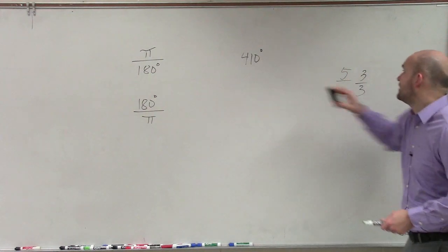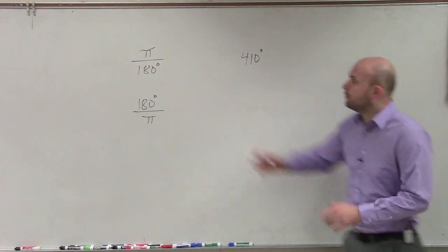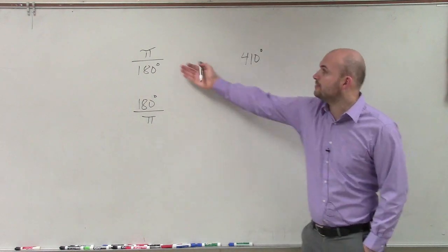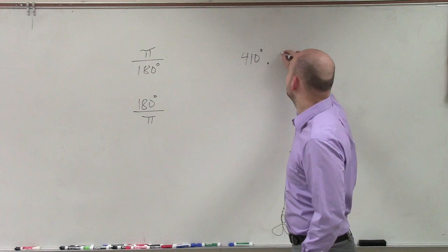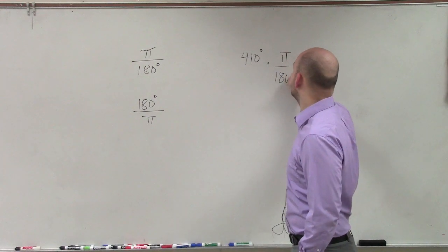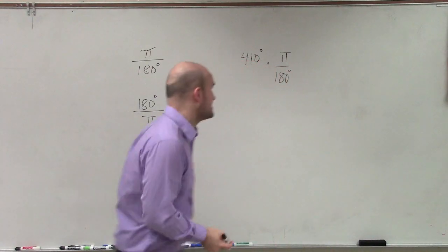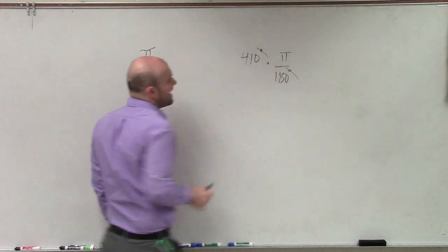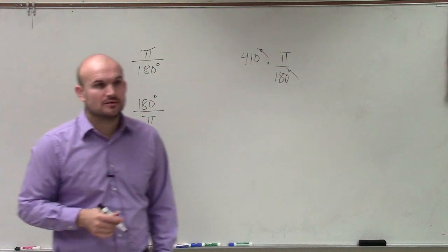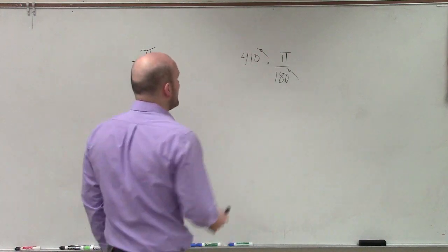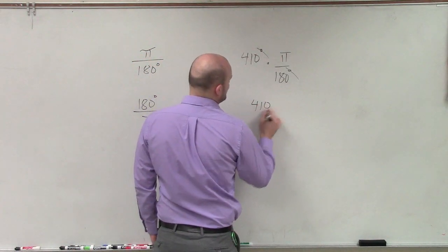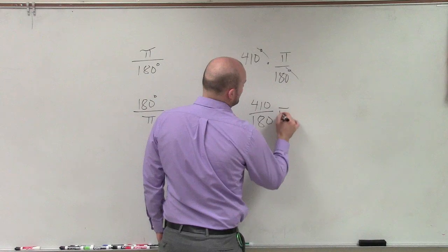So if I want to get this into radian format, I need to say, well, which one do I want to multiply by? I'm going to want to multiply by π over 180 degrees. The reason being is because now the degree symbols are going to divide out. And then you're left with 410 over 180 times π.